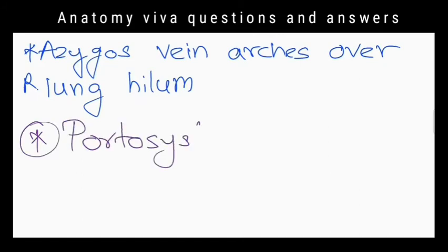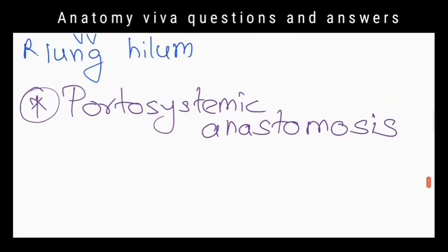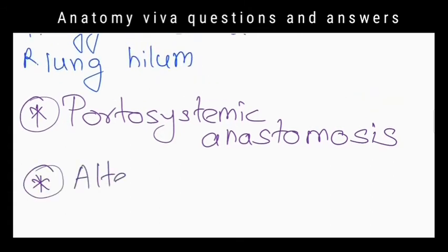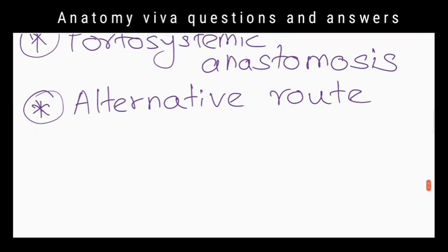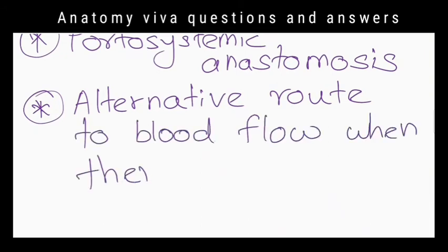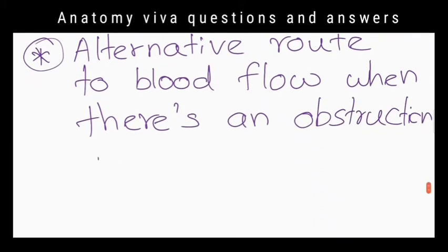What is the importance of azygous vein? Gastroesophageal collaterals drain into azygous vein forming portosystemic anastomosis. Also, azygous vein provides an alternative route to blood flow when there is an obstruction in superior vena cava.